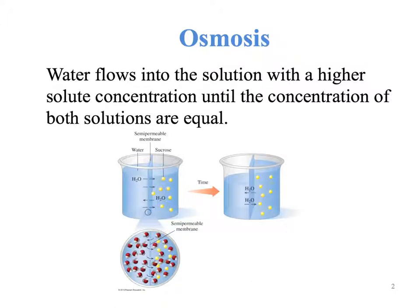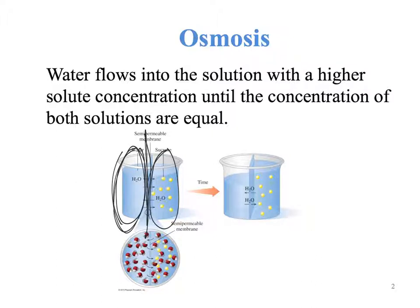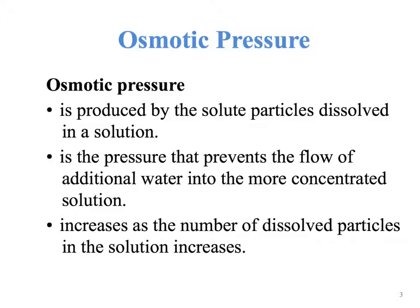If we look at a picture, we see that we have no solute on one side and solute on the other, separated by a semipermeable membrane. The concentration of solute is low on one side and high on the other, so water will flow from the low side to the high side, trying to make the two concentrations equal. The osmotic pressure is produced by the solute particles dissolving in solution, and this is the pressure that prevents the flow of additional water into the more concentrated solution.